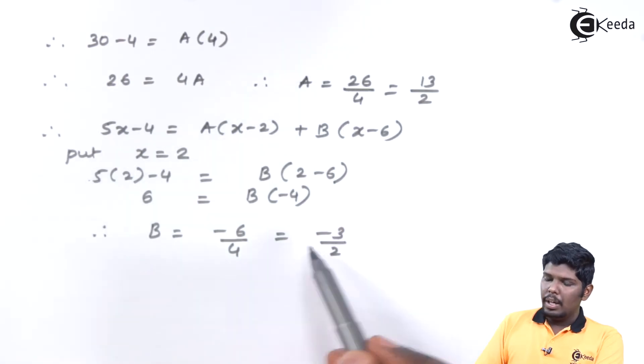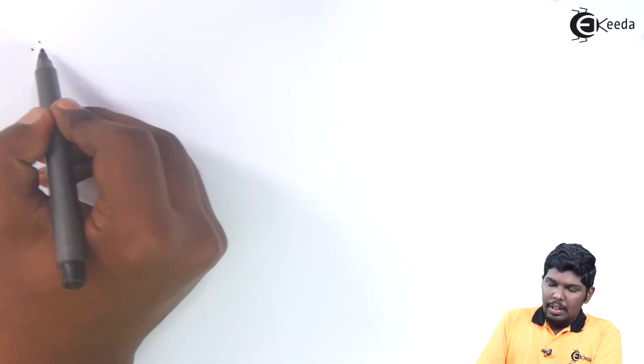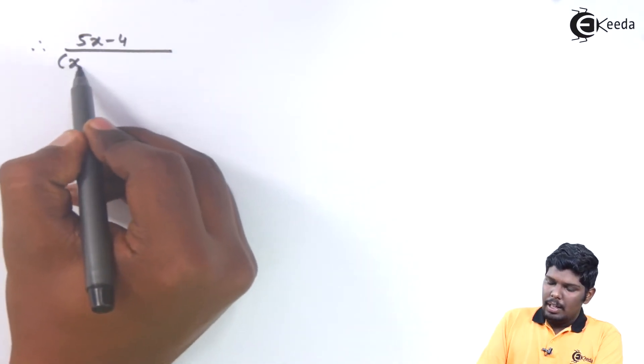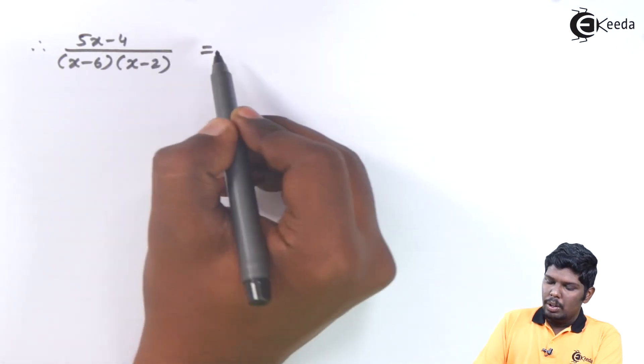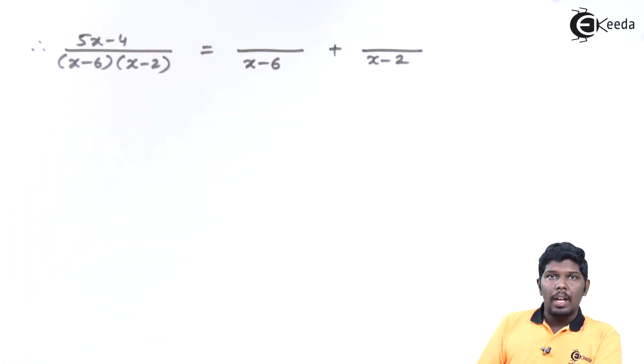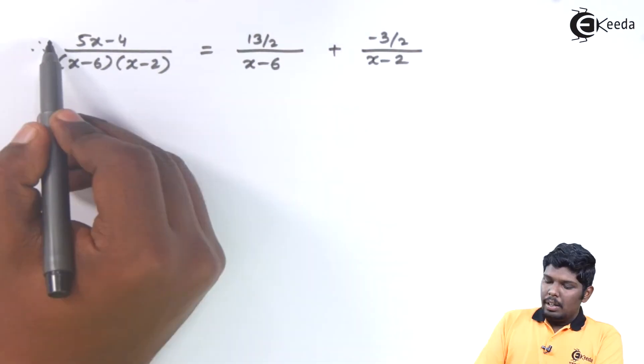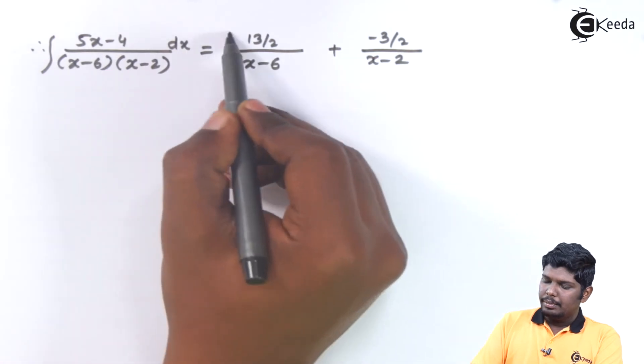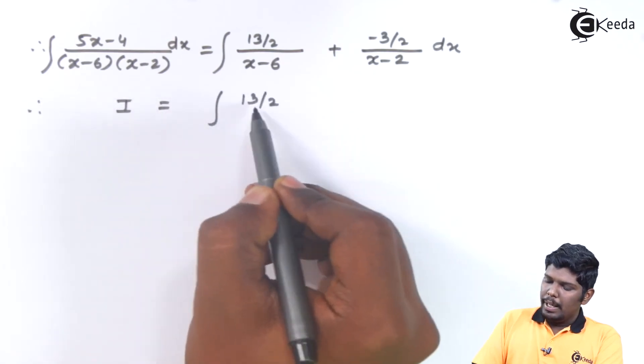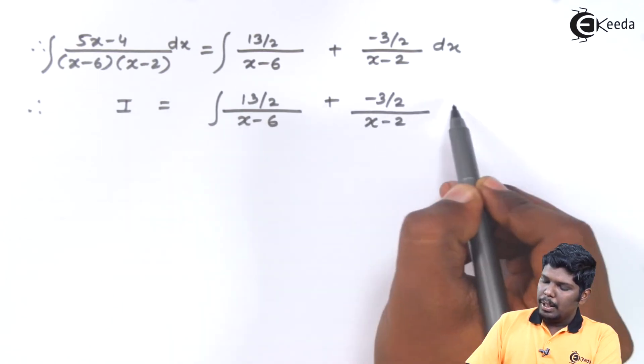Now let us substitute the values of a and b in this equation. And instead of integrating this part we will integrate the right hand side. Therefore 5x minus 4 upon x minus 6 into x minus 2 was equal to a upon x minus 6 plus b upon x minus 2. And the value of a and b are 13 by 2 and minus 3 by 2. Now let us integrate on both sides.